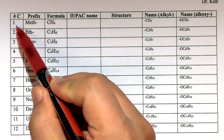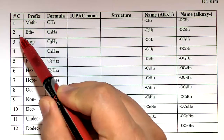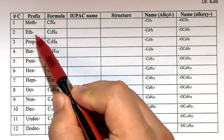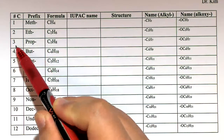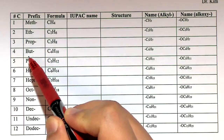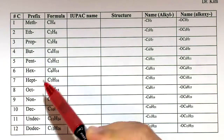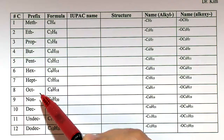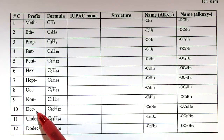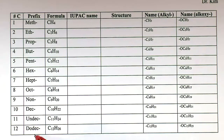Number 1: meth. Number 2: eth. Number 3: prop. Then bute, pent, hex, hept, oct, non, dec, undec, dodec.